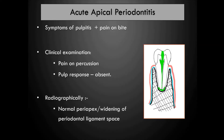The patient may have symptoms of pulpitis and pain on biting. On clinical examination there is pain on percussion, as during percussion the tooth is pushed against the inflamed periodontal ligament. Pulpal test is usually negative as the pulp is dead.